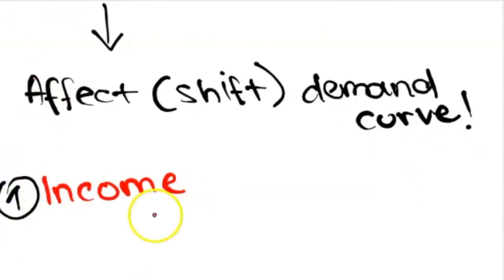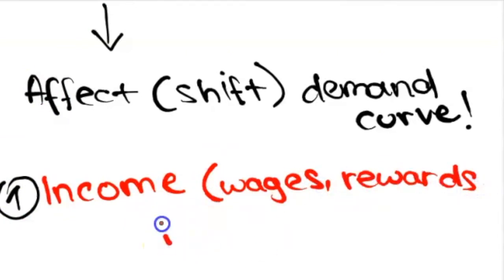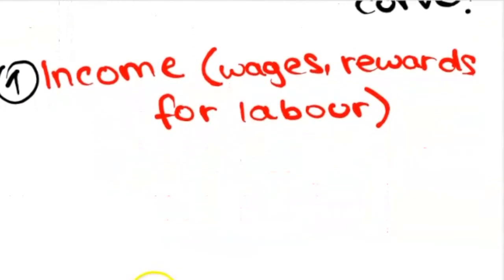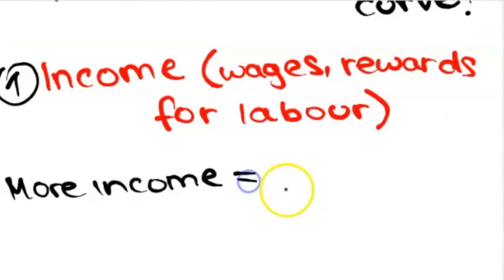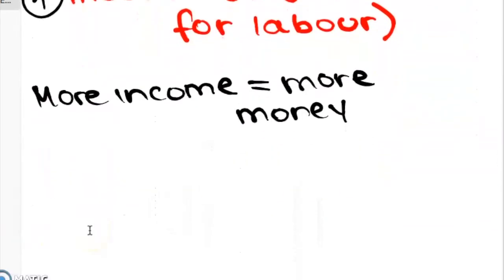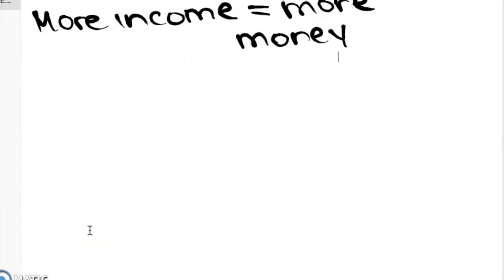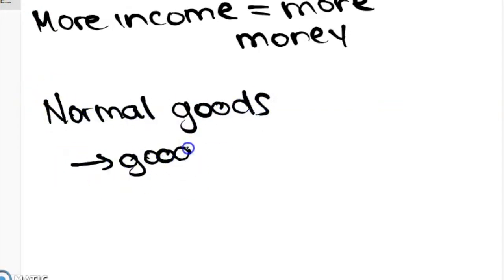The first factor that can affect demand is changes in income. Obviously, if people's incomes increase, then they might be able to buy more of a good regardless of the price of the good. With an increase in income, we assume that the demand curve will shift to the right. However, this is only true depending on the nature of the good.